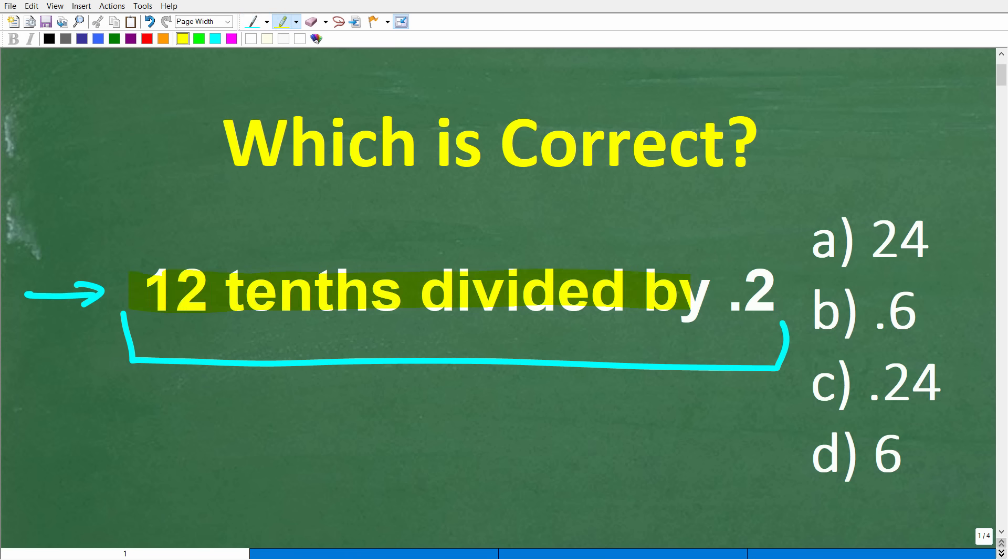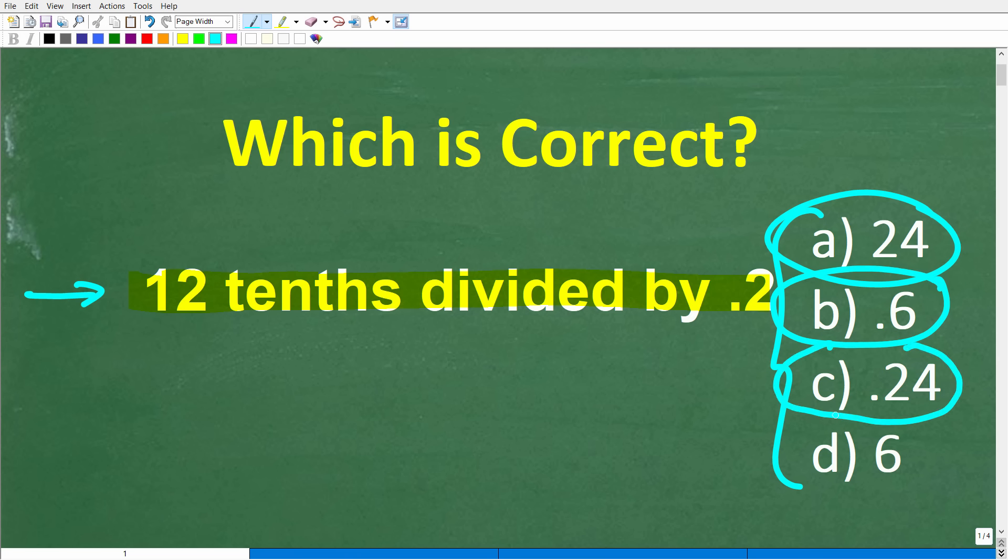Let's take a look at this problem. We have 12 tenths divided by 0.2. This is a multiple choice question. A is 24, B is 0.6, C is 0.24, and D is 6.